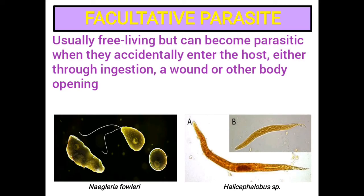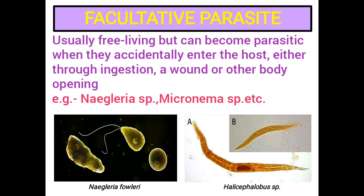Facultative parasites: These are usually free-living but can become parasitic when they accidentally enter the host either through ingestion, a wound, or other body opening. Examples include certain free-living amoebas of the genus Naegleria and free-living nematodes belonging to the genus Micronema. Infection of humans with either of these is extremely serious and usually fatal.